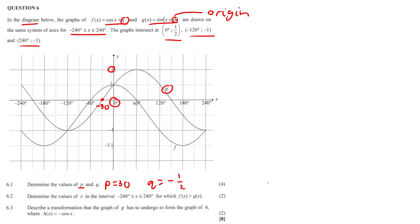Question 6.2: determine the values of x in the interval negative 240 to 240 for which f(x) is greater than g(x).